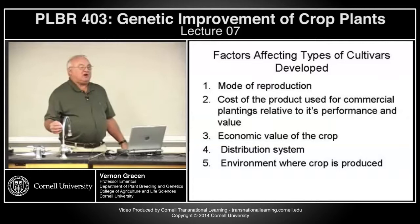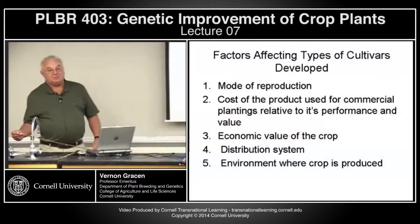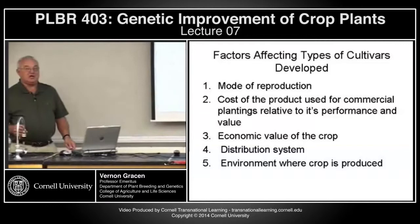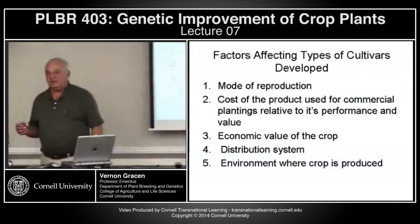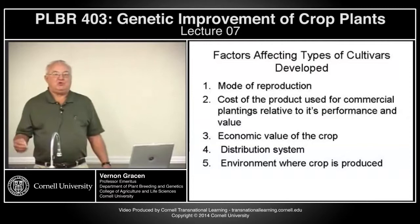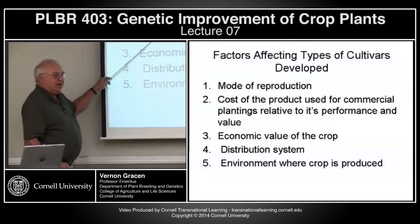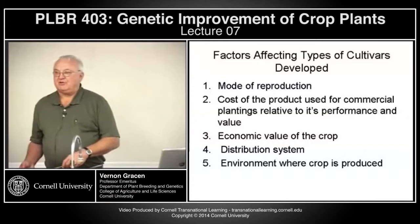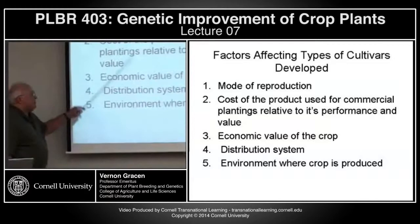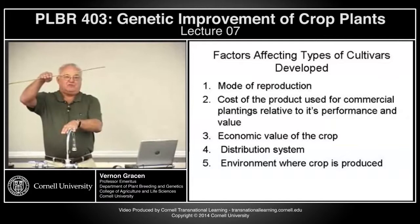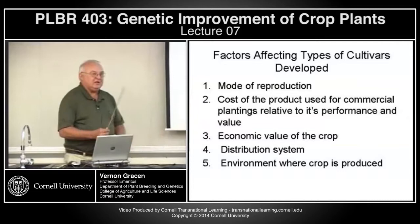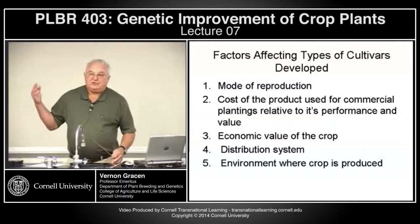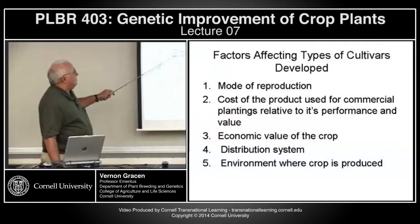The factors that affect what type of cultivar you'll develop include the mode of reproduction — probably the most important — but the cost of producing and selling the product versus its performance and value are also very important. There would be a lot more hybrid varieties grown today if you could produce hybrid seed at a price that guarantees a return on investment to the farmer. Hybrid seeds are very common in vegetable varieties where seed price is very high — you pay $15 or $20 for 25 or 50 seeds — versus a crop like maize where you pay around $100-$120 for a bag of 80,000 kernels. The economic value of the crop determines what sort of cultivar you develop.